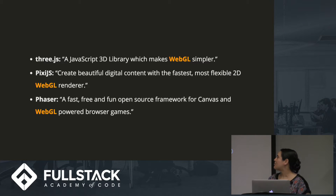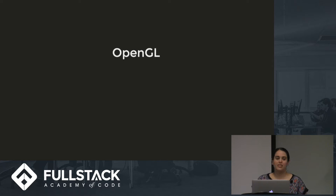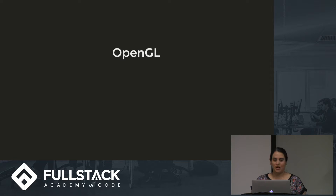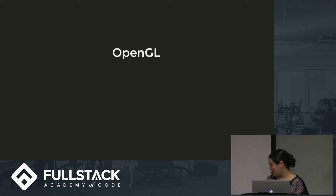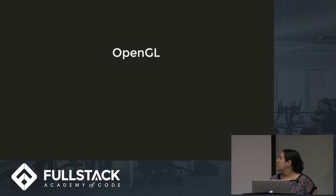To understand what WebGL is, we first have to understand something called OpenGL. In the 1980s and early 1990s, software was being developed with different interfaces for specific graphics hardware, and this was kind of an issue. There was an open standard at the time, but a company called SGI said, hey, we have this proprietary system called IrishGL. So let's take IrishGL, strip out anything that's not graphics related — like keyboard input, mouse input, windowing — and make that available to everyone. So in 1992, OpenGL was born.